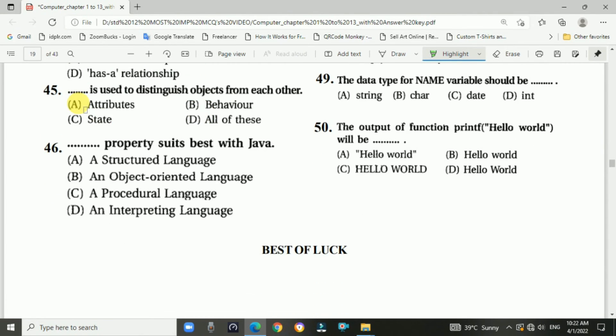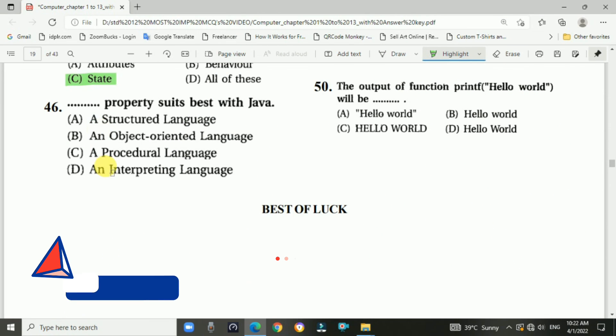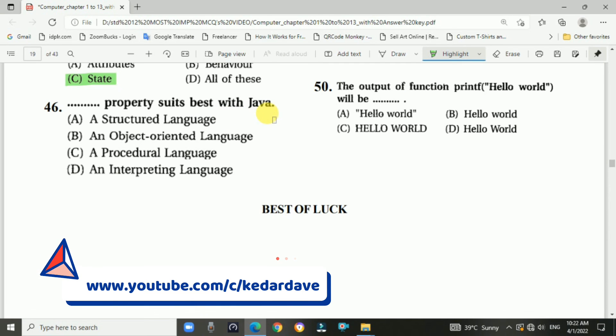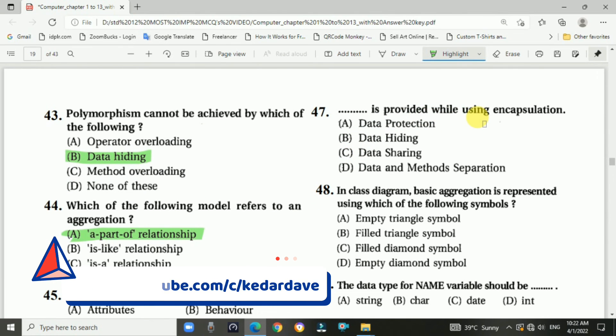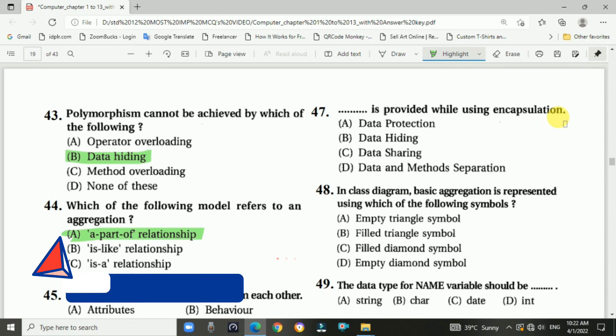Question number forty-five: Blank is used to distinguish objects from each other. Answer is C, state. Question number forty-six: Blank property suits best with Java. Answer is B, an object-oriented language. Question number forty-seven: Blank is provided while using encapsulation. Answer is A, data protection.